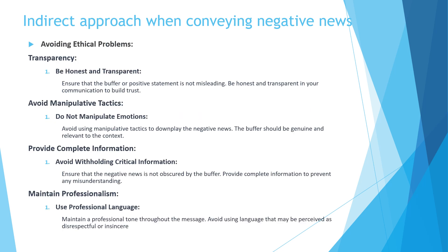Using the indirect approach to convey negative news can be a very sensitive task, so it's essential to handle this communication ethically, ensuring transparency and professionalism while considering the recipient's feelings. The first ethical consideration is being honest and transparent — honesty is crucial and the buffer or positive statement should not be misleading. For example, instead of saying 'we have to cancel the project due to unforeseen circumstances,' say 'we need to cancel it due to serious budget constraints.' Clearly stating the reason without making it seem arbitrary maintains trust.